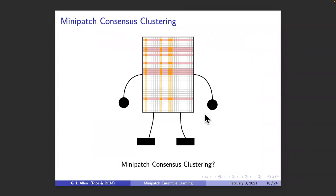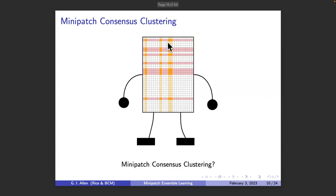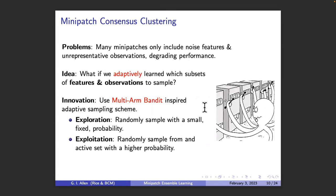So why not use mini patches for consensus clustering? We did this, and there are some computational improvements, but there are challenges when using it on genomic-scale data. When you subsample a tiny mini patch of features in high-dimensional settings, most of the features you subsample are probably noise and have no signal to help you cluster, which degrades performance. You might also get unrepresentative observations. So random subsampling of mini patches is a real problem — why not adaptively subsample mini patches instead?